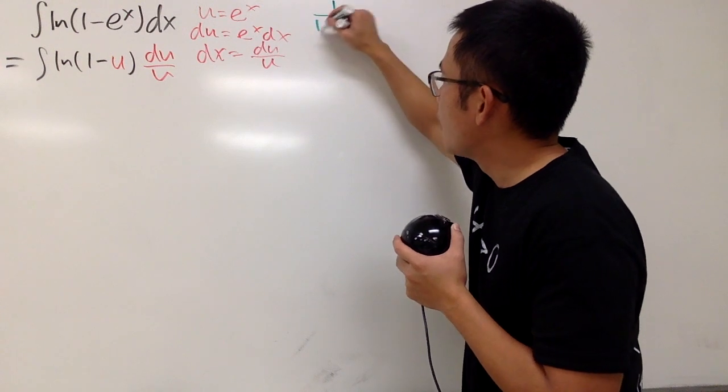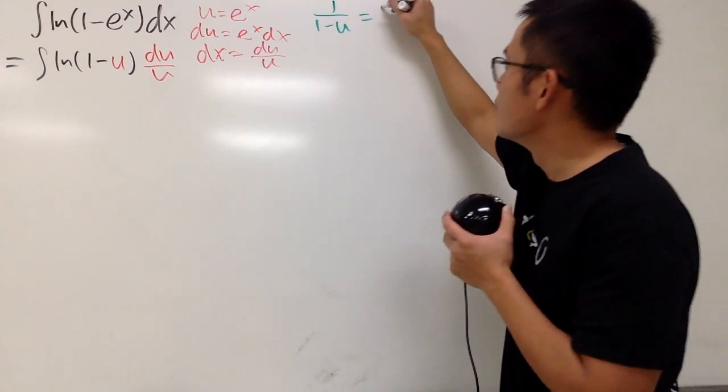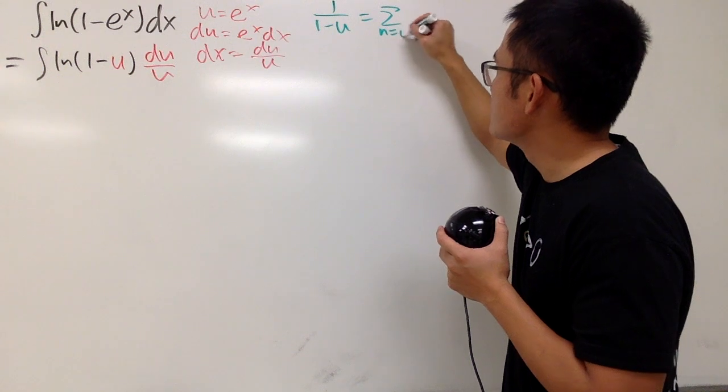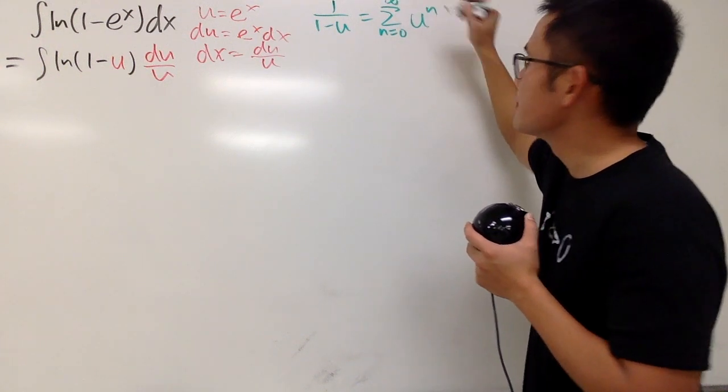Let me write it down for you. I'll put down 1 over 1 minus u. This is equal to the series as n goes from 0 to infinity, u to the nth power.